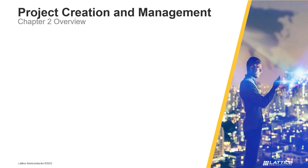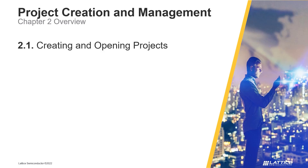Chapter 2 consists of five sections. In the first section, called Creating and Opening Projects, the general process for creating Radiant projects and opening existing projects are covered. In section 2, Managing Project Files, we will introduce Radiant's File List tab and discuss the basics of using it for file management.